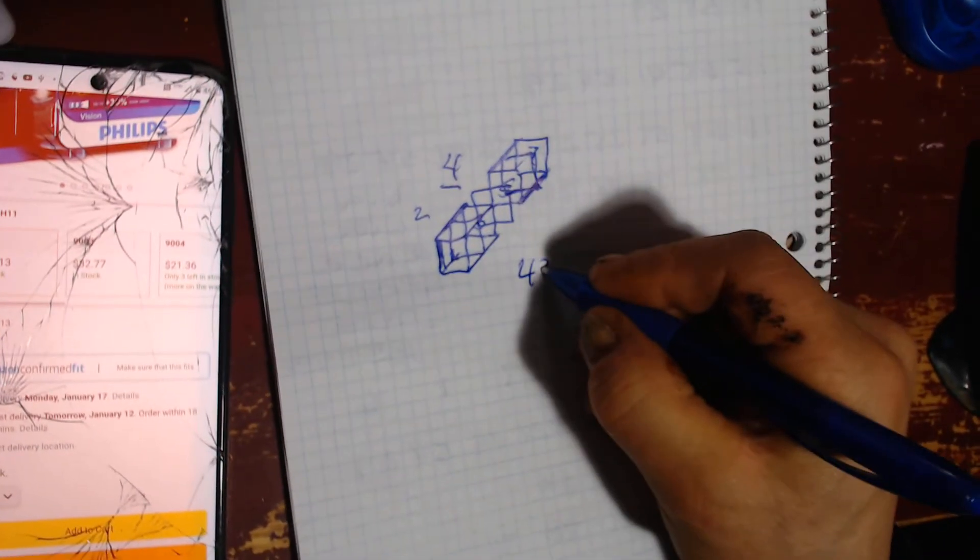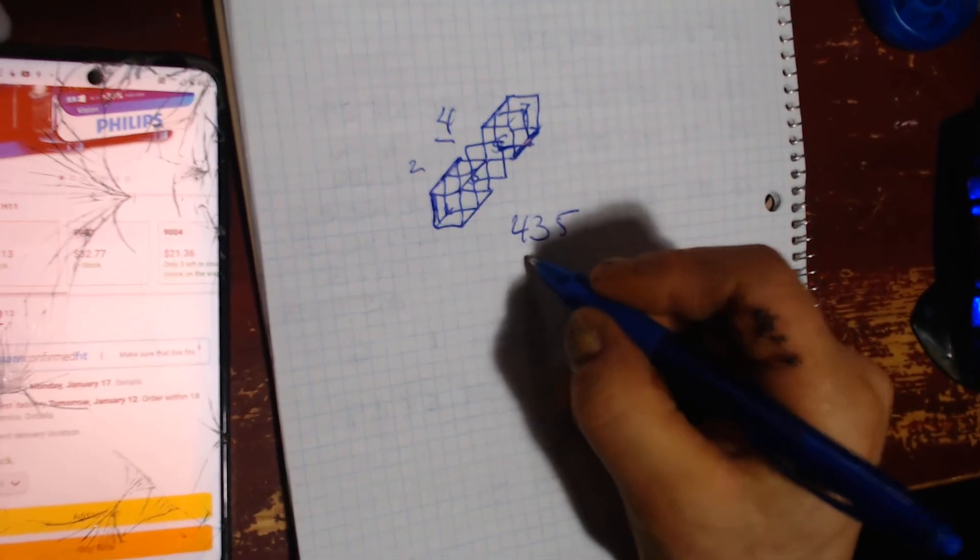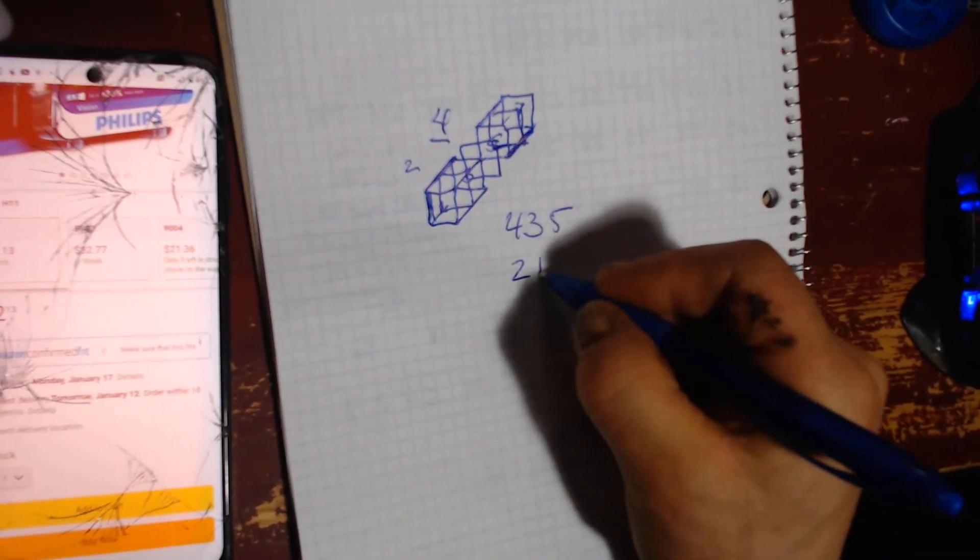So it'll be 4, 3, 5 that will link. And before that, it was 2 connecting 1, 3.